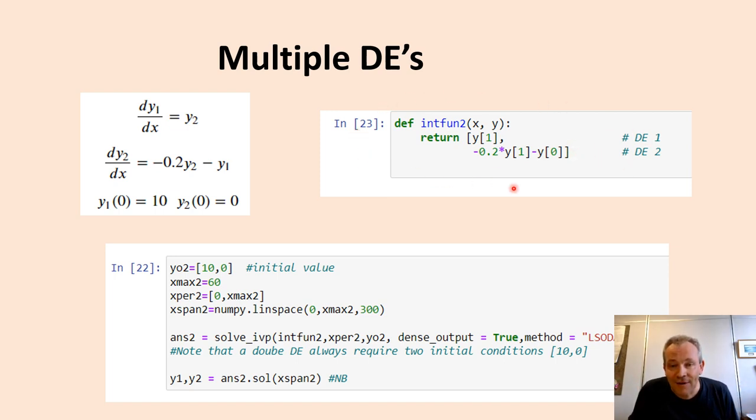So, once again, we just give it the function. You'll see that this function now is like a vector. There is the first function, and there is the second function. So, y has two components in this case. Very important. That's implying that if we define an initial value, we've got to give a y1 and a y2 initial value like we have over here.